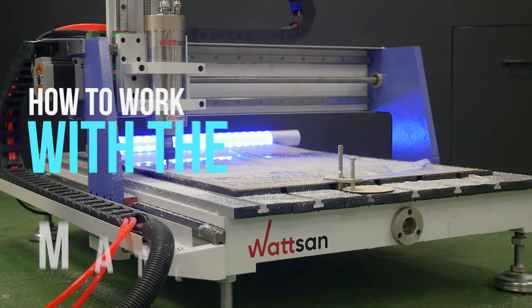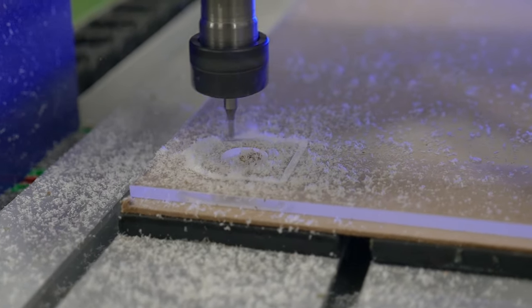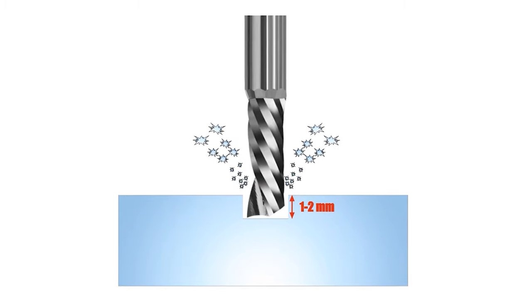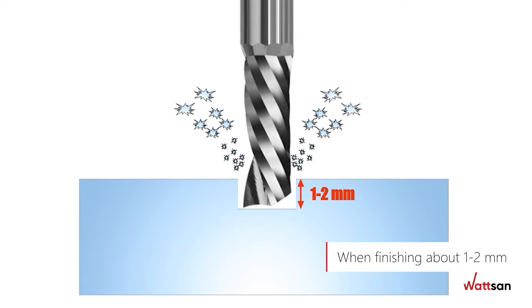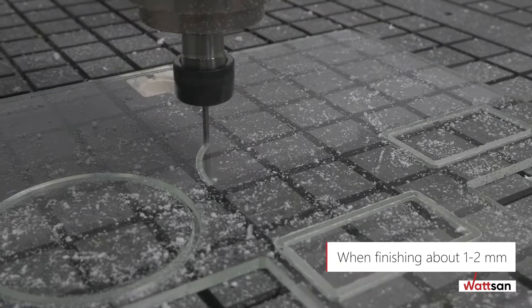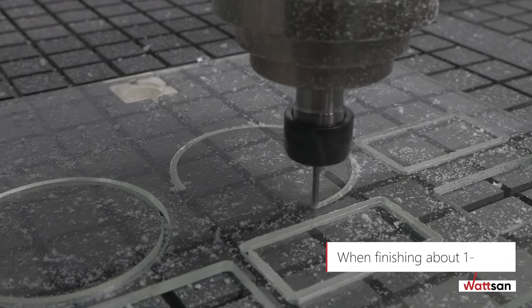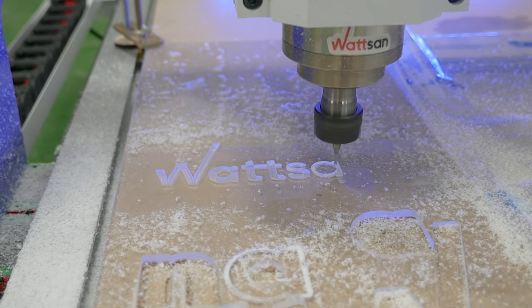How to work with the material? For processing plexiglass, we recommend using spiral or double helical cutters. We recommend choosing a small depth of cut. When finishing about 1-2 mm, no more than 4 mm during roughing, as the material is fragile and capricious. At greater depths, splitting or fusion may occur in the material.